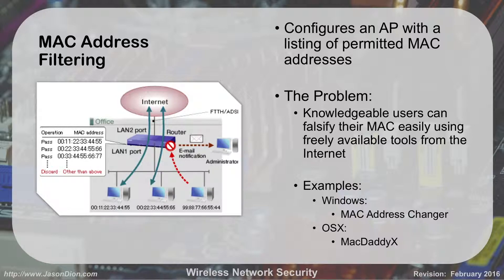The problem with MAC address filtering is that a knowledgeable user can change their MAC address with software very easily — it takes about three to five seconds. Blacklisting doesn't work well because of this. For example, at a hotel that charges $10–$15 a night for internet but gives you 10 minutes free — if you change your MAC address, they'll give you another 10 minutes because they're using a blacklist. Tools like MacChanger or MacDaddyX can change your MAC address over and over. We do this all the time in penetration testing exercises.